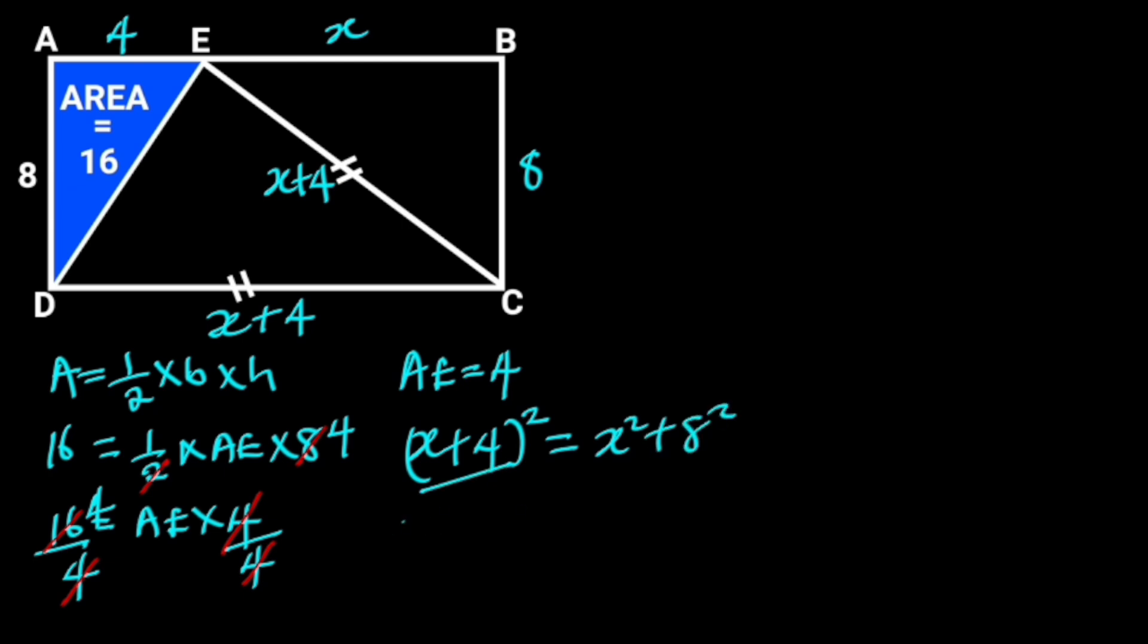Expanding x plus 4 squared will give us x squared plus 8x plus 16. On the right side, we have x squared and 8 squared is 64. Next, we collect like terms, doing so will give us x squared minus x squared plus 8x is equal to 64 minus 16.